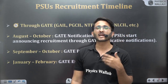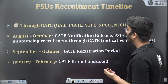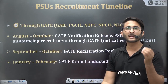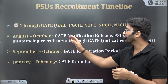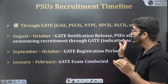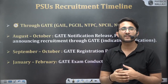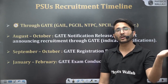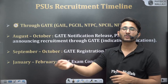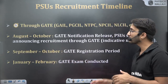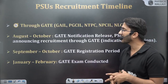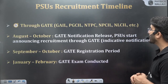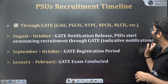If you talk about PSU recruitment through GATE, mainly the notifications come between August and October — that is the general range. However, there is no fixed timeline. For example, the NTPC notification through GATE 24 was released in the last few days of January 2025, before the GATE 25 examination. So there is a lot of uncertainty, but maximum times PSUs release notifications in the August to October range.